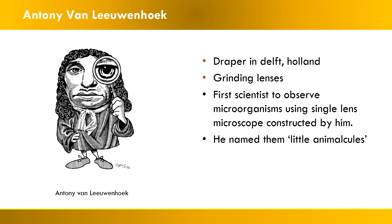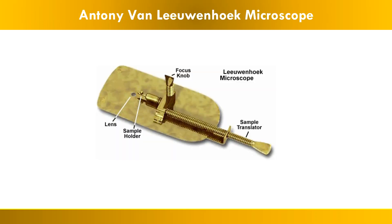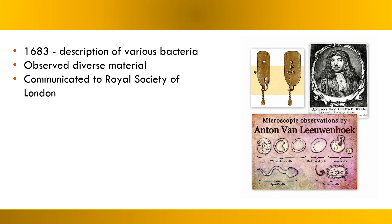The first scientist we are going to talk about is Antony van Leeuwenhoek. He was a draper in Holland who did the grinding of lenses, and he is the first scientist to observe microorganisms using a single-lens microscope constructed by him. He called these microorganisms or bacteria 'little animalcules.' This is the first microscope discovered by Leeuwenhoek — as you can see, it has a focus knob, a sample translator, and a sample holder with a small lens.